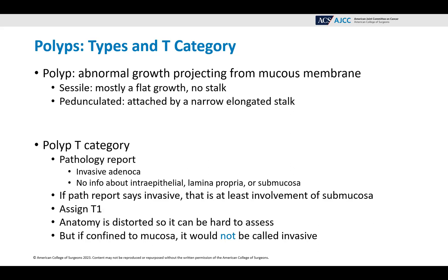Let's talk about polyps — the types and the T category. A polyp is an abnormal growth projecting from the mucous membrane. Sessile is mostly a flat growth with no stalk, and pedunculated is attached by a narrow elongated stalk. For the polyp T category, if the pathology report says there's invasive adenocarcinoma but there is no information about whether it's intraepithelial, lamina propria, or submucosa, as long as the path report says it's invasive, that is at least involvement of the submucosa, so you can assign T1. The anatomy is often distorted in these polyps, so it can be hard for the pathologist to assess it, but if it's confined to the mucosa, it would not be called invasive.